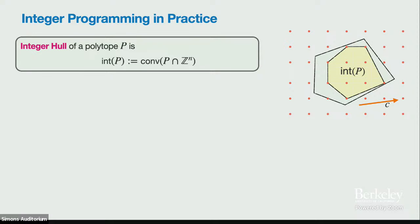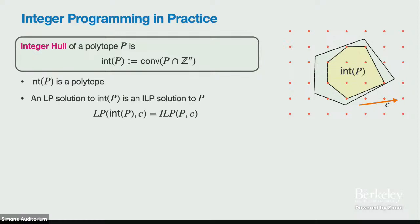The integer hull is the smallest convex body containing all integer points. The vertices of this polytope are the integer points in the initial polytope. Since the vertices of the integer hull are the integer solutions, if we run linear programming on the integer hull, we get an integer solution. This is a reduction from integer programming to linear programming.